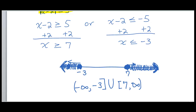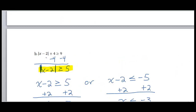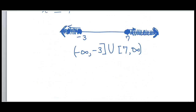I do want to let you know how you can check your solutions for these types of examples. Any solution is going to include any number that's in that shaded region. For instance, 10 is over here in this shaded region. If I go to my original equation and plug in 10 for x, I get 10 minus 2, which is 8. If I take the absolute value of 8, that's still 8. And if I add 4 to it, I get 12, which is definitely greater than or equal to 9. So you can always check your solutions by plugging in any number from the shaded region.